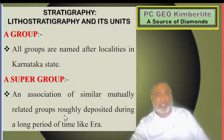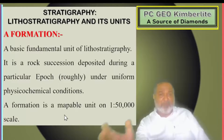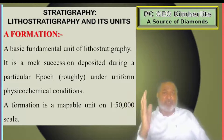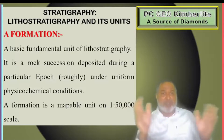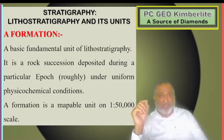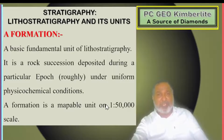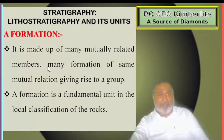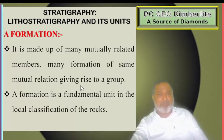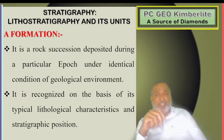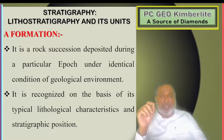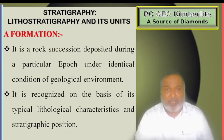Groups are named after localities, as we have just seen in the case of Dharwar under the Karnataka area. A supergroup is an association of similar, mutually related groups, roughly deposited during a long period of time like an era. Formation: a basic, fundamental unit of the lithostratigraphic unit. It is a rock succession deposited during a particular period under uniform physiochemical conditions. A formation is a mappable unit at 1:50,000 scale.